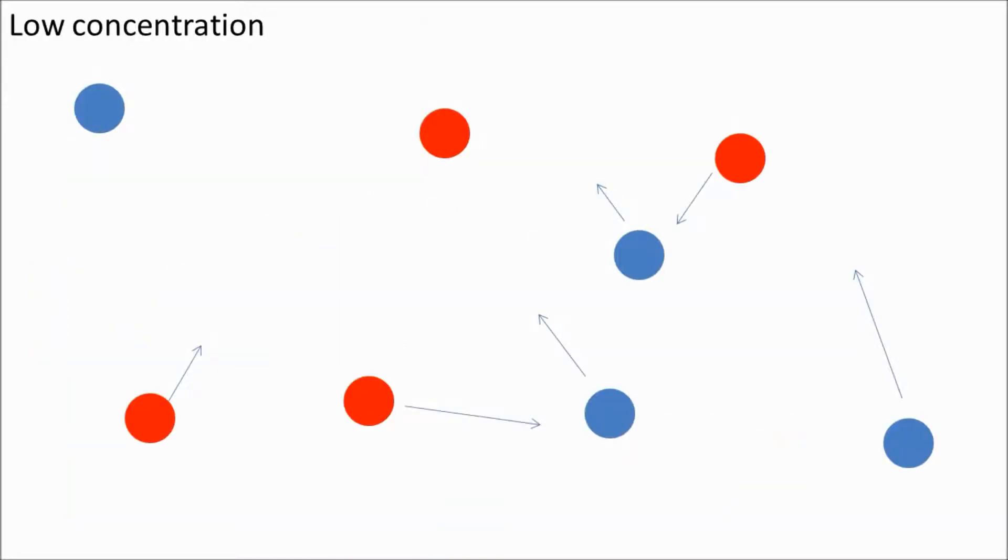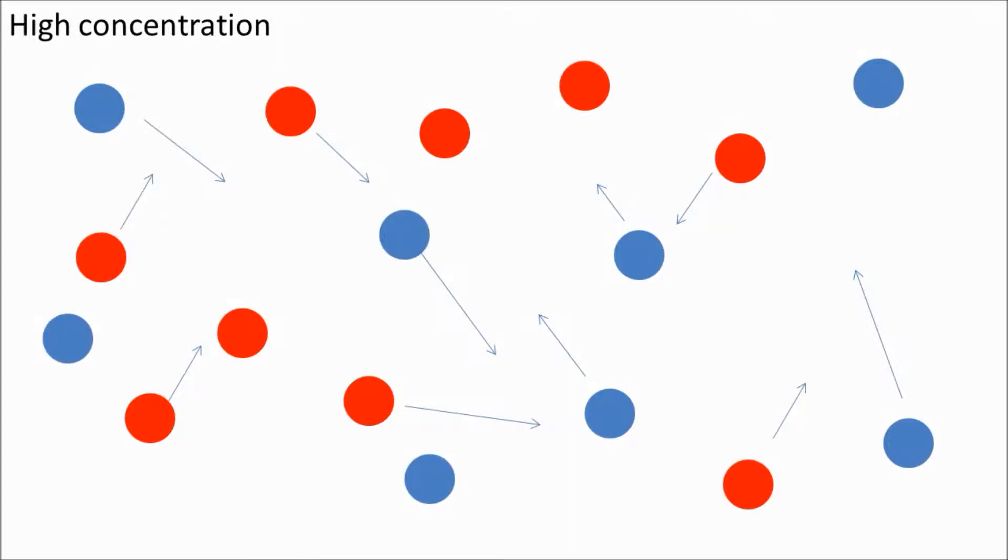You can think of concentration as the number of particles in a given volume. These particles are bouncing around and colliding with each other. So, if we increase the number of particles, we get more collisions per second and therefore a higher rate of reaction. You can see here that you get more collisions with a higher concentration of reactant.